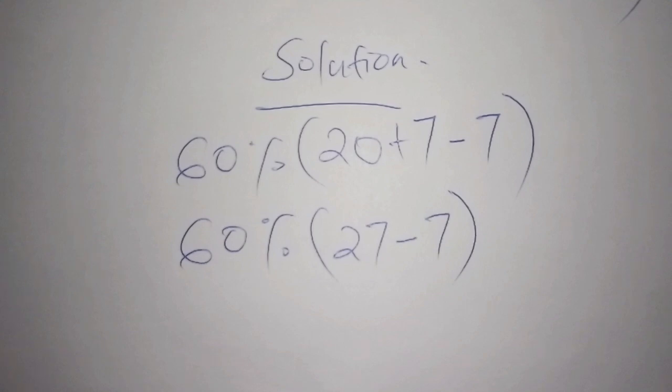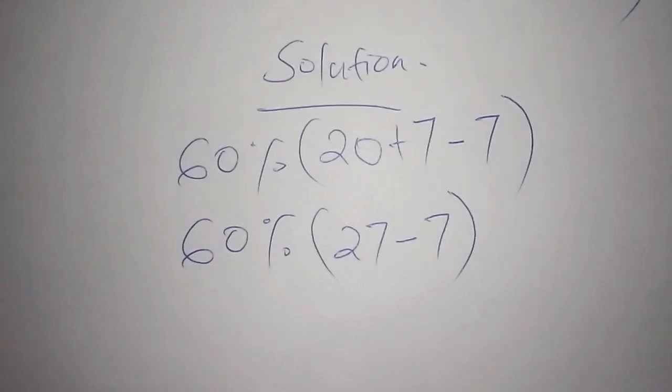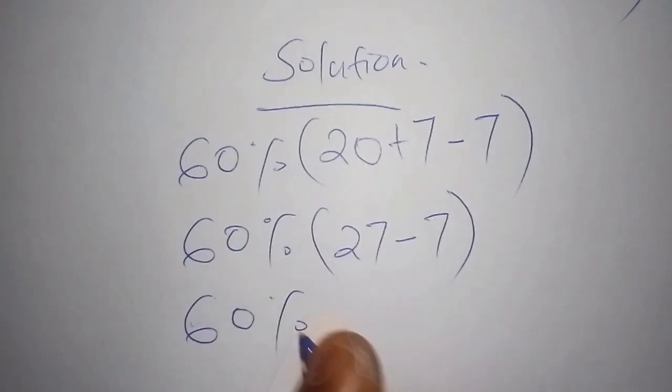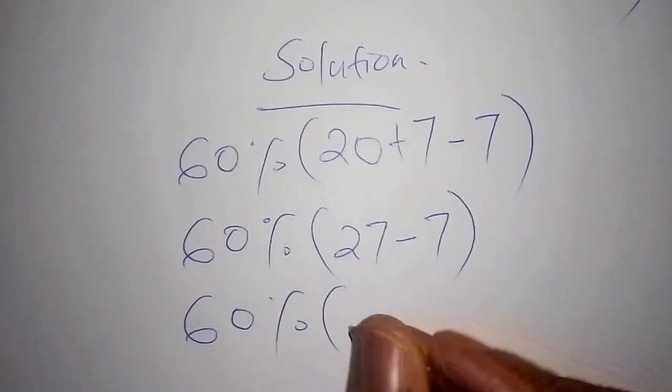Our third step: we shall now have 60 percent, then we close the bracket. 27 minus 7, that is 20.